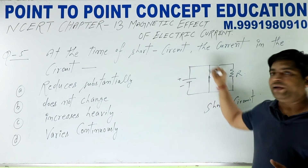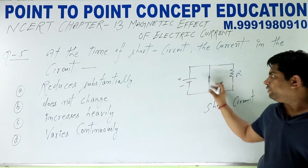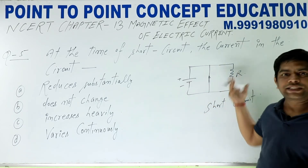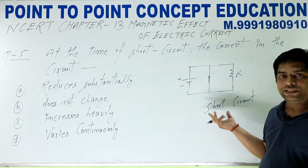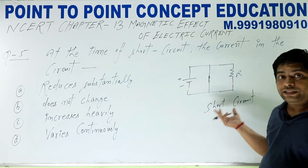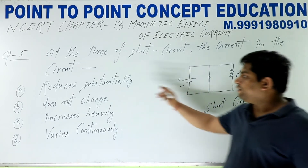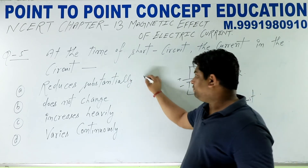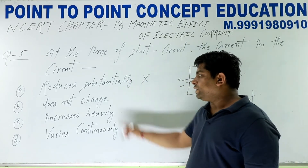तो इस case में क्या हो जाता है — resistance bypass हो जाता है। Current इसके अंदर heavily flow करता है। Current जब resistance खत्म हो जाएगा, तो current एकदम से ज़्यादा flow करेगा। तो यहाँ पर — reduce तो होगा नहीं, यह वाला option गलत है।